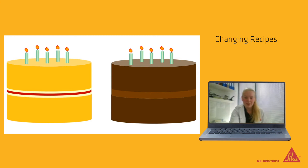In the same way, if you change the ingredients of one of our materials, you will change its properties, making it harder or shinier or even more elastic. When we are designing a new material, we will try lots of different recipes until we get it just right, and each time we make a change, we have to test the properties that result from the different recipe.